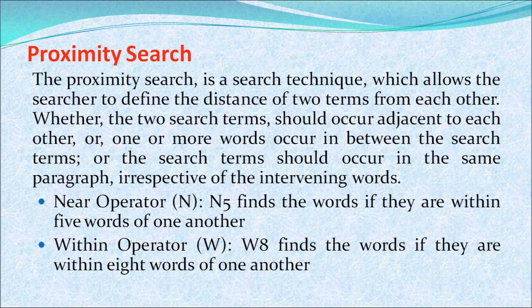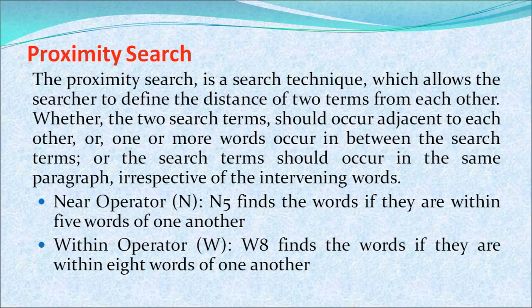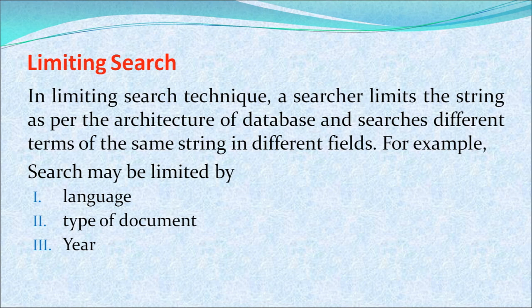Proximity search is a technique which allows the searcher to define the distance between two terms. Whether the two search terms should occur adjacent to each other, or one or more words occur in between, or the search term should occur in the same paragraph irrespective of intervening words. For example, the Near operator N5 finds words if they are within five words of one another, and the Within operator W8 finds words if they are within eight words of one another. The limiting search technique limits the string as per the architecture of the database and searches different terms in different fields — for example, limiting by language, type of document, or year.